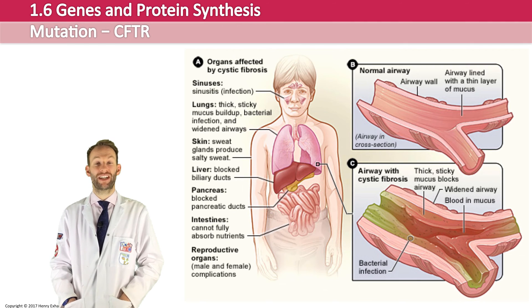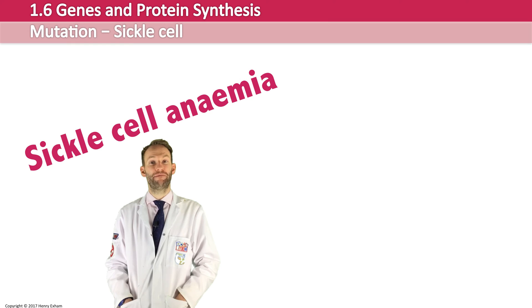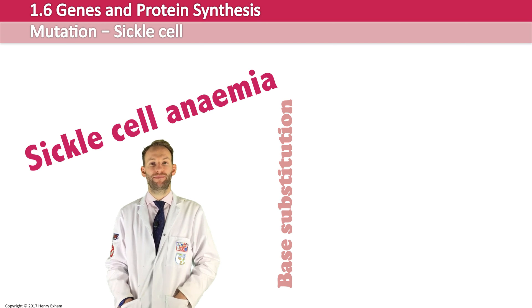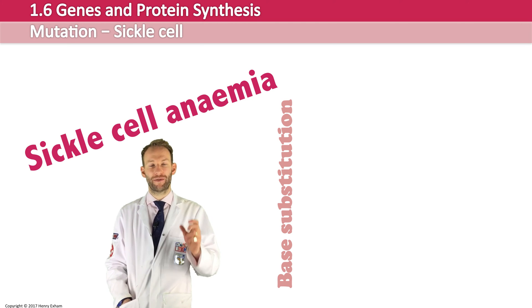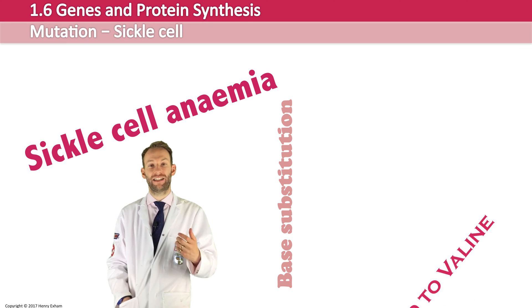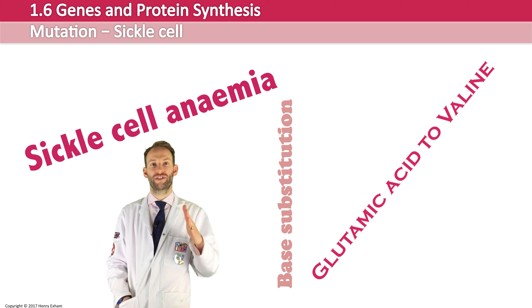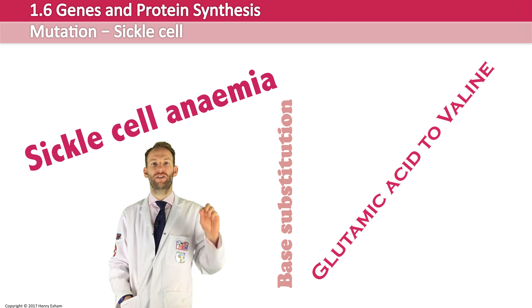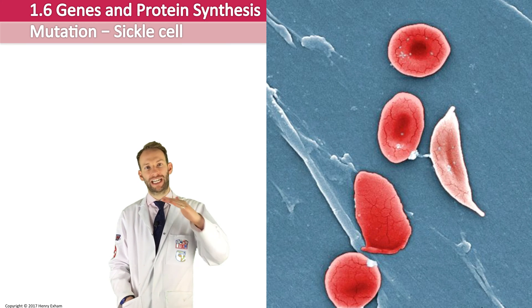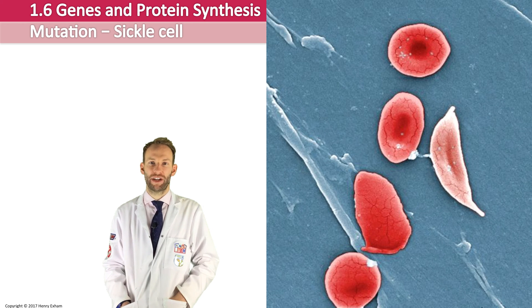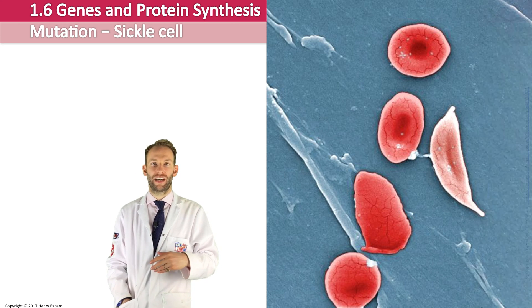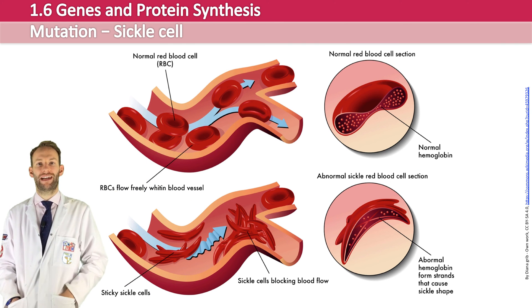Another example of a condition caused by a point mutation is sickle cell anemia. It's caused by a base substitution which changes one amino acid in the chain used to make beta haemoglobin. There are 147 amino acids in this polypeptide, but the mutation changes glutamic acid to valine. That one amino acid change causes the whole nature of the protein to change — the haemoglobin starts sticking together, forming long rods that completely distort the biconcave shape of red blood cells, making them sickle shaped. These sickle cells can then block blood vessels and cause serious issues with carrying oxygen around the body.